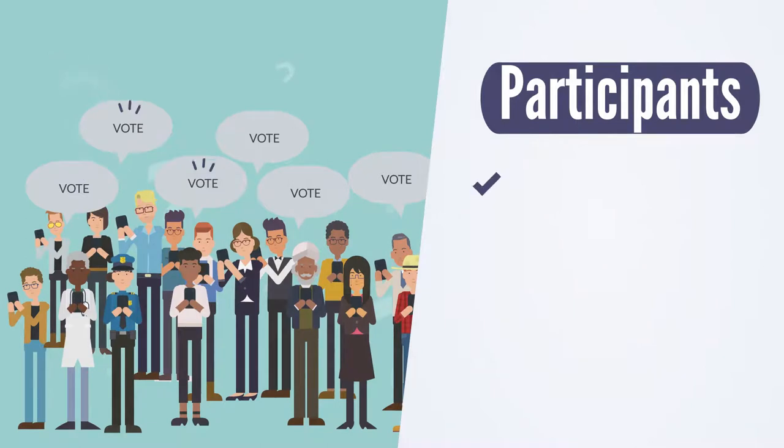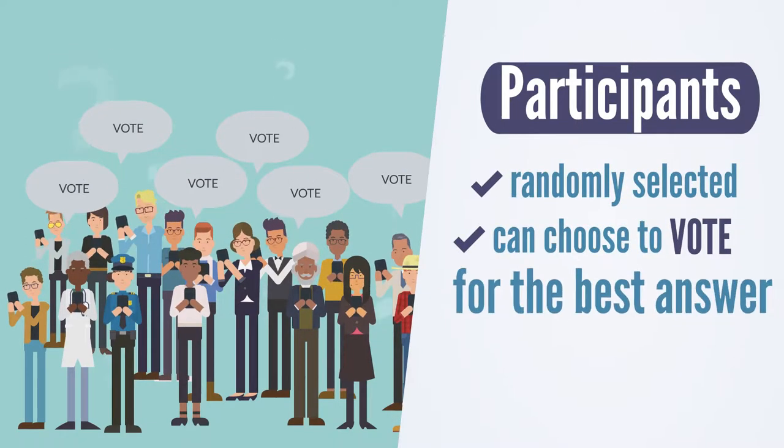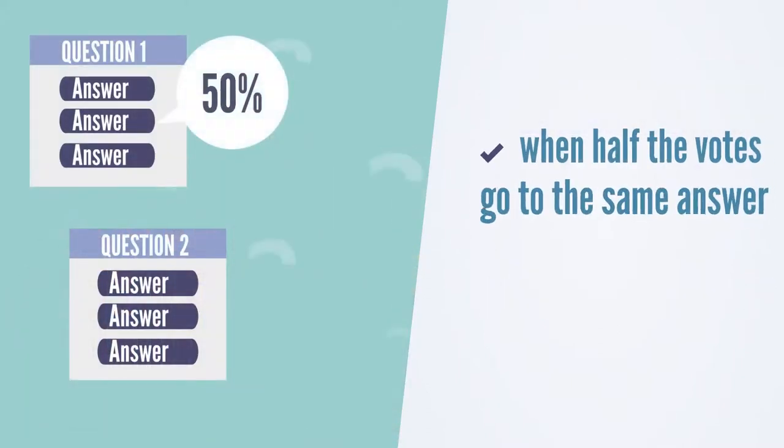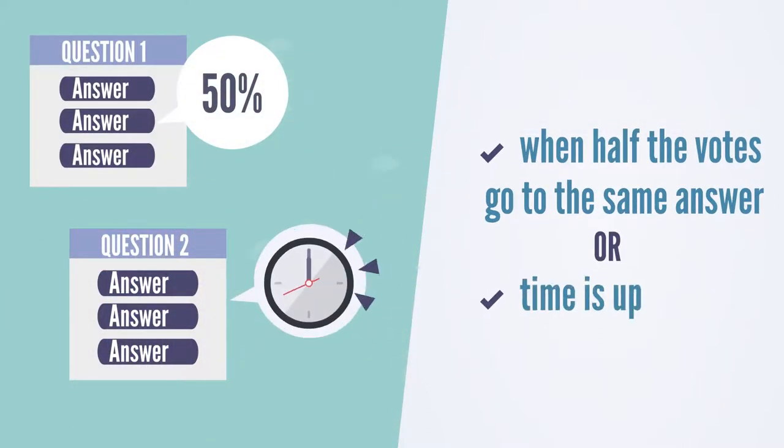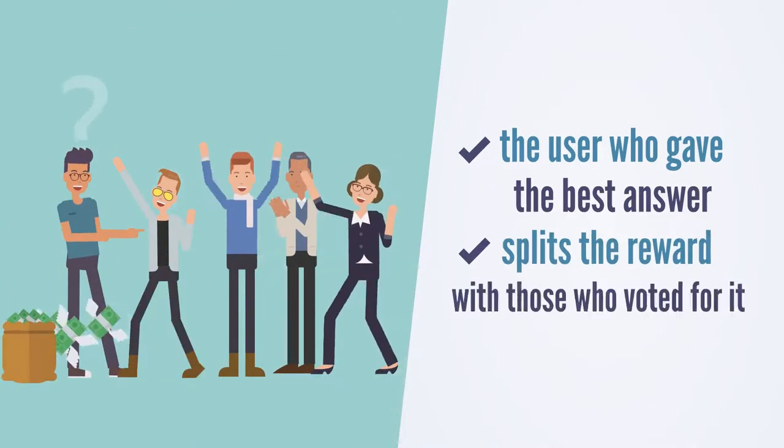Participants who receive the broadcast are randomly selected and can choose to vote for the best answer. When half the voters have voted for the same answer or when 12 hours have passed, the user who gave the best answer splits the reward with those who voted for it.